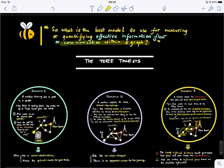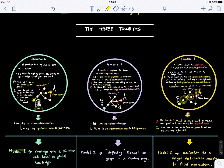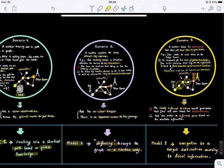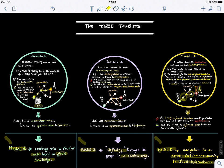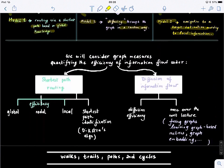These three different scenarios — Alice, Bob, and Jane — are the foundations of three big theories or concepts in graph communication. Model one is routing via the shortest path based on global knowledge. Model two, where Bob wanders in a random but weighted manner, is what we call diffusing through the graph. The third model is navigation to a target destination according to local information. These three — shortest path length, diffusion, and navigation — are three big concepts with a lot of ramification and many theories.